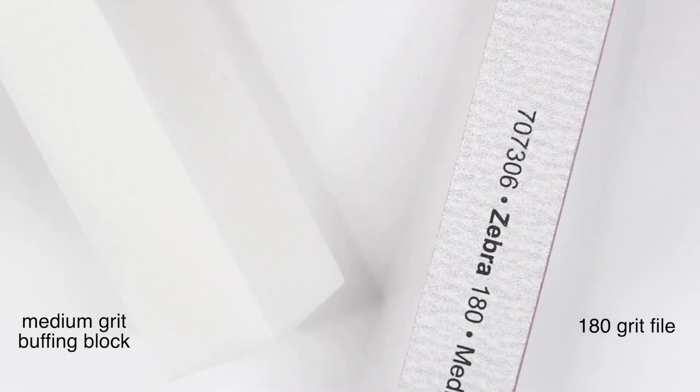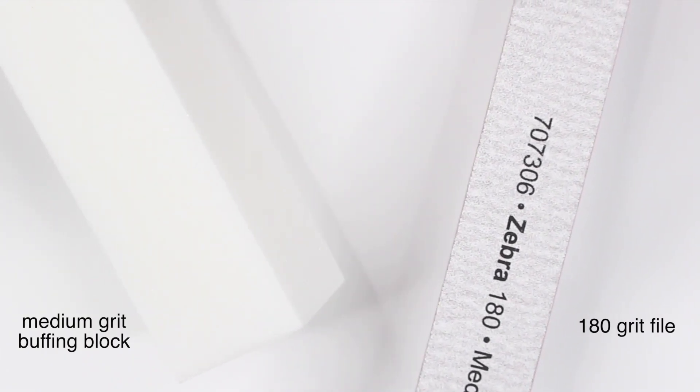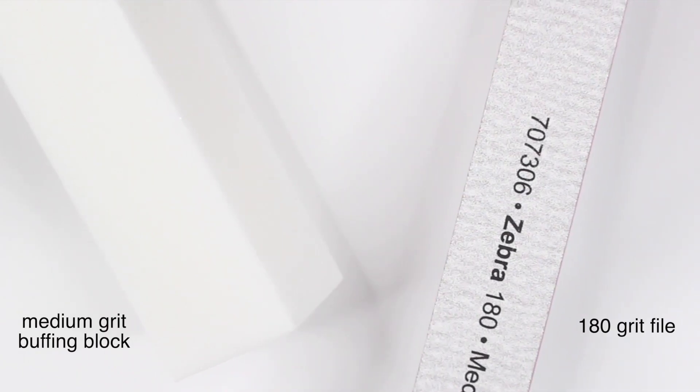And then the next step is to remove that shiny layer from your nails. So your nails are naturally going to have that kind of shiny sheen look to them, which I'm trying to show you right now. And you want to completely get rid of it and give it a matte look. So you have two options here. You can use a nail file 180 grit or a medium grit buffing block.